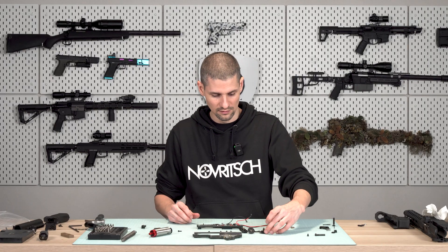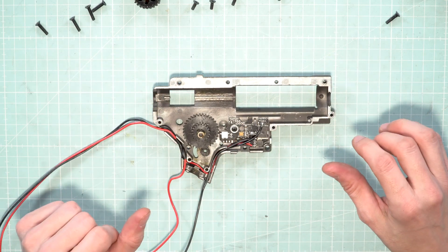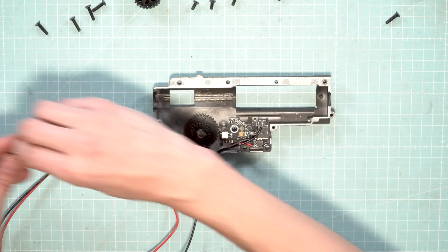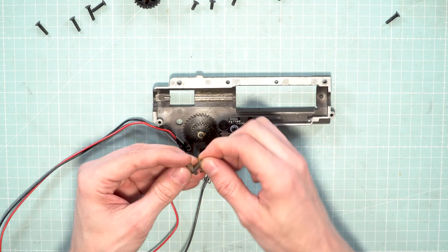We continue with the gears, starting off with the spur gear. Make sure it spins freely. Then we can put the anti-reverse latch back in place.